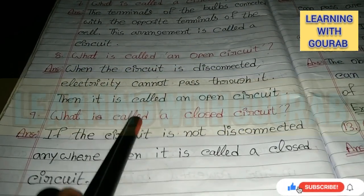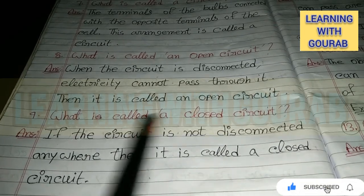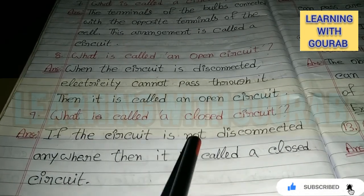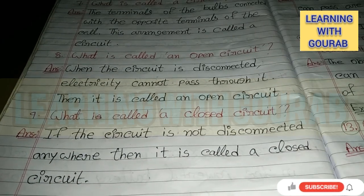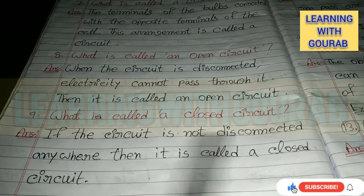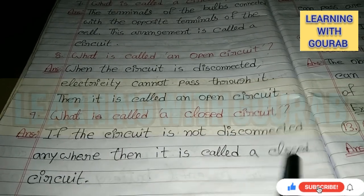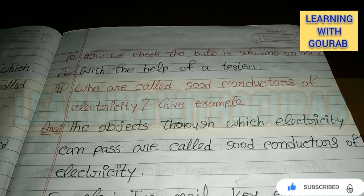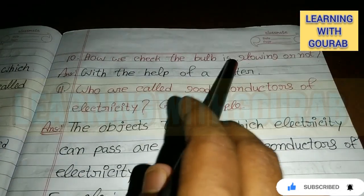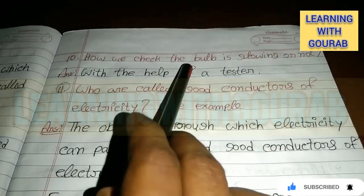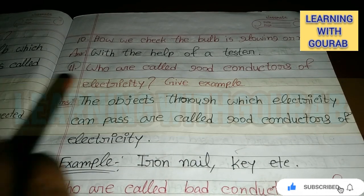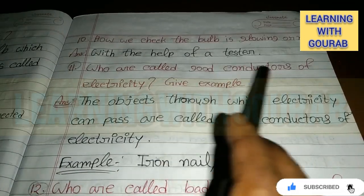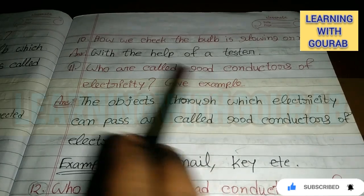Next: What is called a closed circuit? Answer: If the circuit is not disconnected anywhere, then it is called a closed circuit. Next question: How do we check if the bulb is glowing or not? Answer: With the help of a tester.